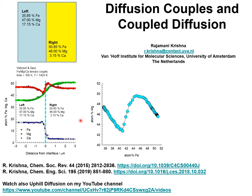The diffusion couple technique is a powerful experimental method which provides a framework to determine interdiffusion coefficients in solid solution systems such as alloys, glasses, cements, etc. As an example, consider the interdiffusion of iron-magnesium-calcium mixtures in garnet, a precious stone consisting of a deep red vitreous silicate mineral.